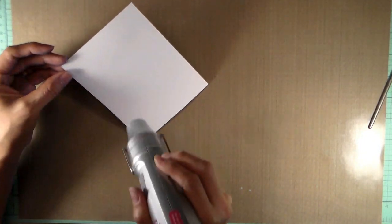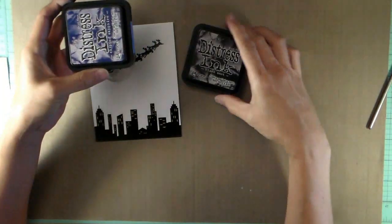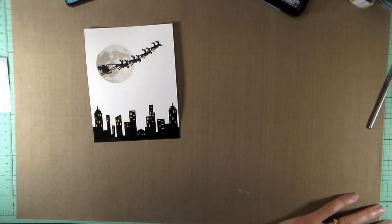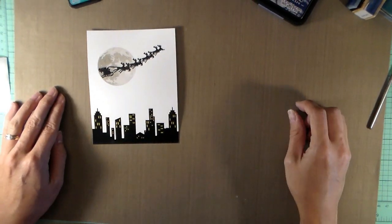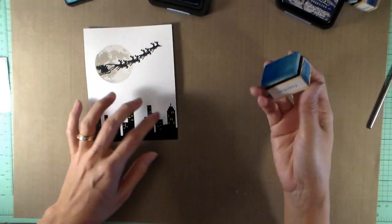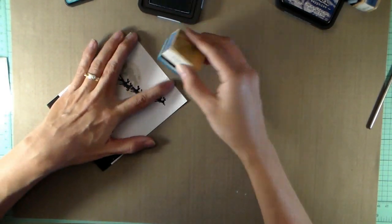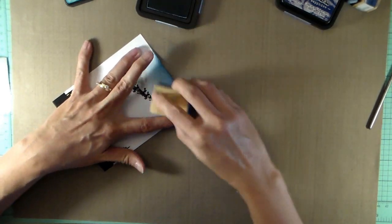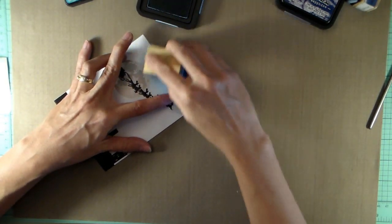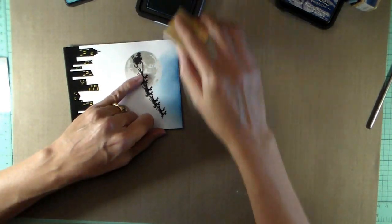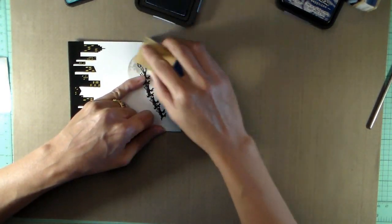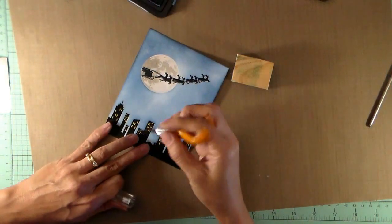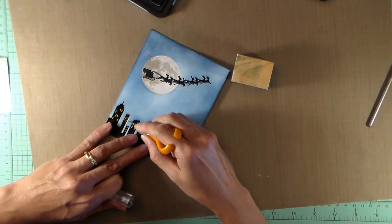Now I'm ready to move on to the next part. I'm going to be using my distress inks to make my night sky. I'm using my applicator and adding chip sapphire, black soot, and peacock feathers to create my night sky. I'm starting on the craft mat and sponging onto my panel. I'm going to keep doing this until I am happy with the night sky. I do want to keep it pretty light around the moon so it looks like the moon is glowing.